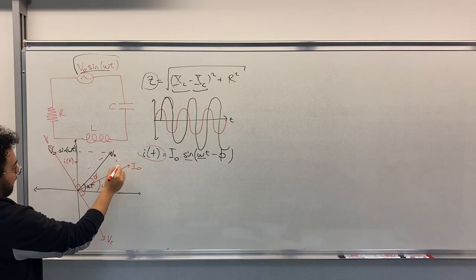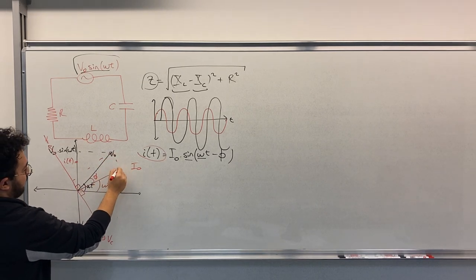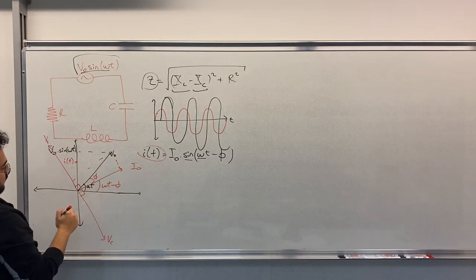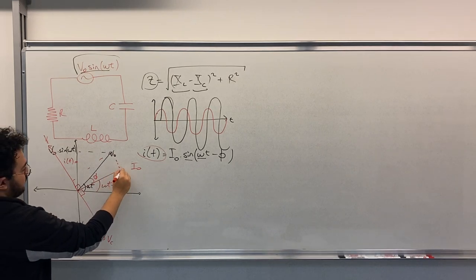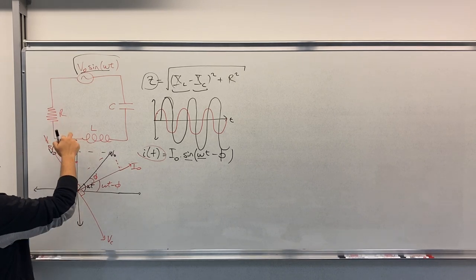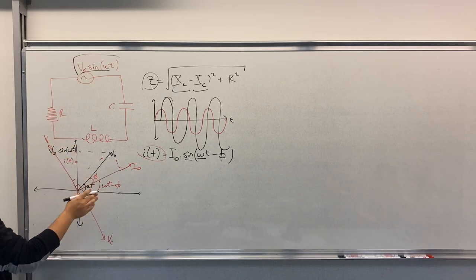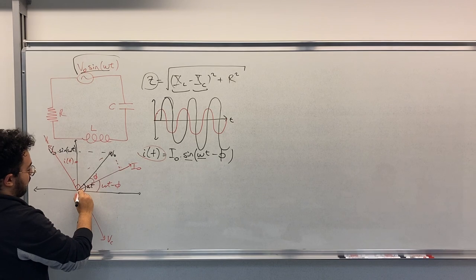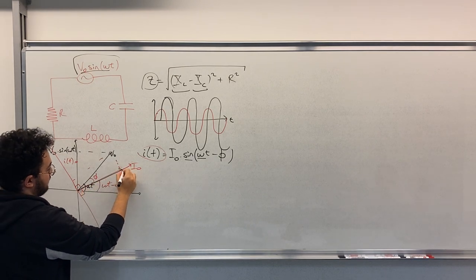So now, sorry, this is I draw. By the way, I forgot. For the resistor, there is no phase between voltage and current. So this is VR.